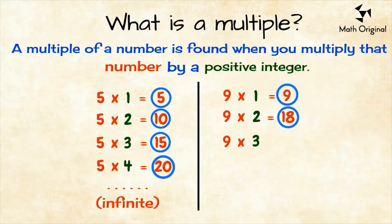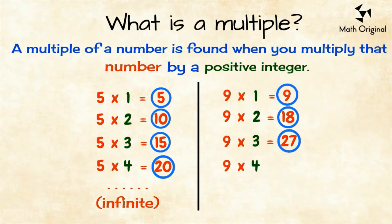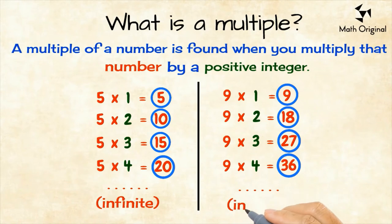9 times 3 equals 27, the third multiple is 27. 9 times 4 equals 36, the fourth one is 36 and so on.